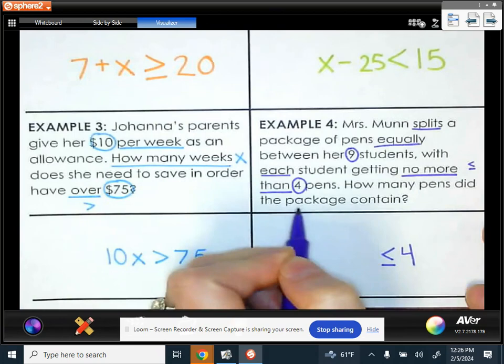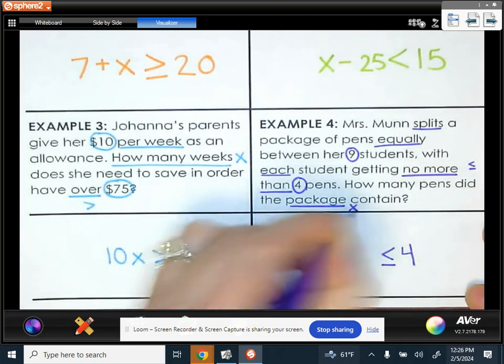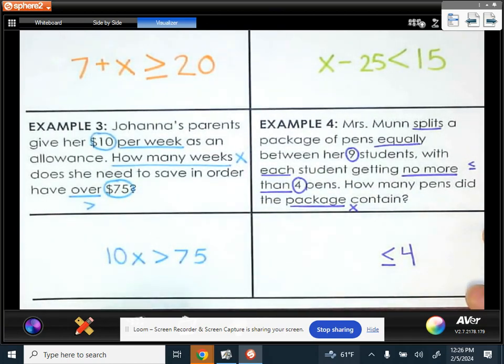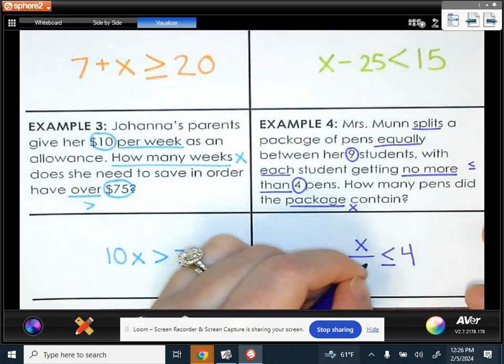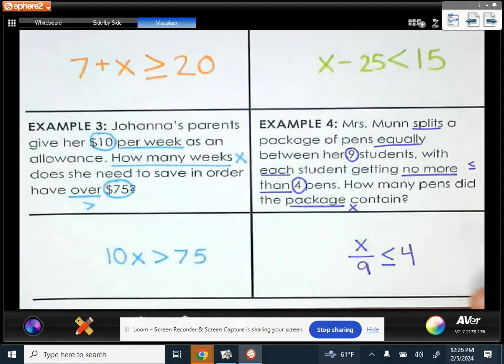And we want to know how many pens were in that package. I'm going to call that x. That was the total that she started with. So if we take her total that she started with, we're going to split that equally or divide it up among the nine students. So that would be x divided by nine. And then it has to be less than or equal to four.